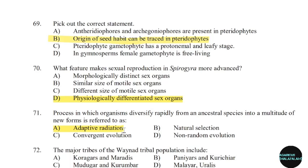72nd question: The major tribes of the Vianite tribal population include. Correct answer: Option B.